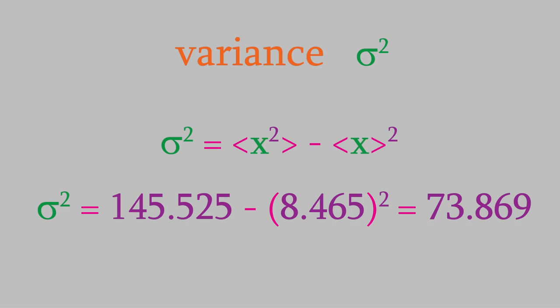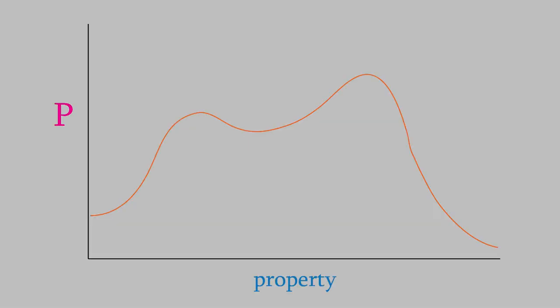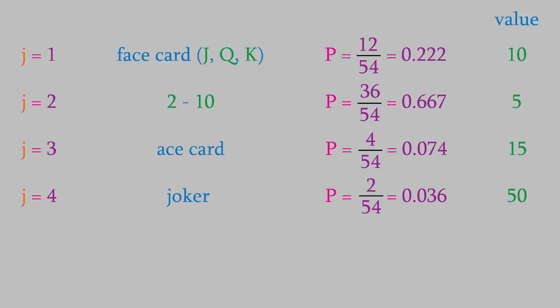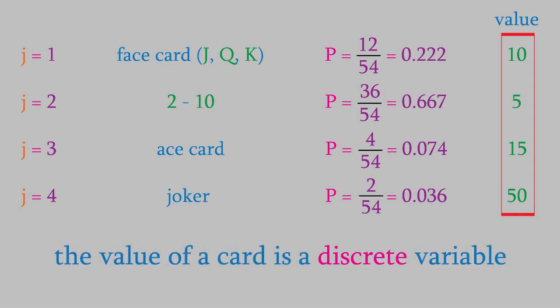So, what does this have to do with quantum mechanics? Well, as we saw earlier, most properties of a system will follow a distribution rather than having only a single possible value. That means we can use the concepts we just discussed to calculate the average value of a property, that is, its expectation value. But there's one complication. All the examples of expectation values we've looked at so far were calculated for quantities that could only have specific values. For example, the playing cards we discussed could only have values of 5, 10, 15, or 50. We say that such properties can have only discrete values.